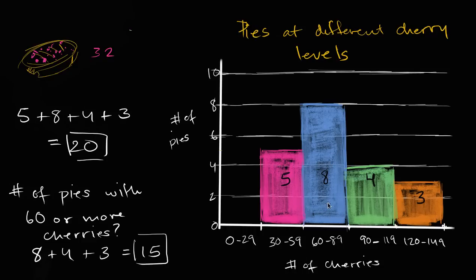Well, we say, well, we have eight pies that have 60 to 89 cherries, three that have 120 to 149. So we have five more pies in the 60 to 89 category than we do in the 120 to 149 category.